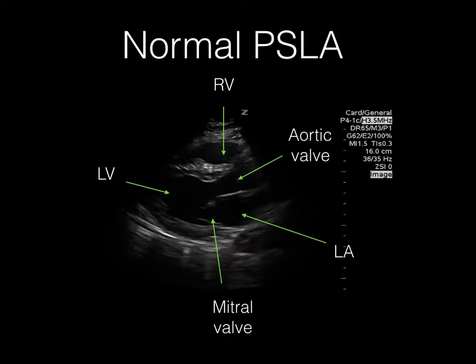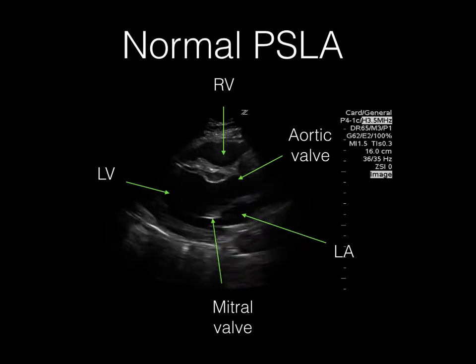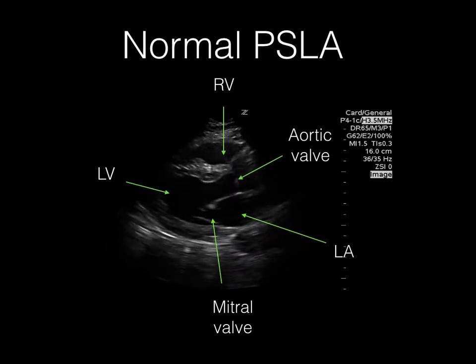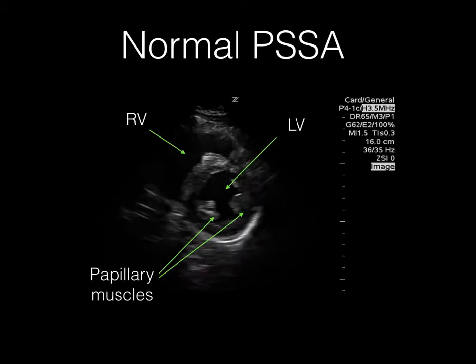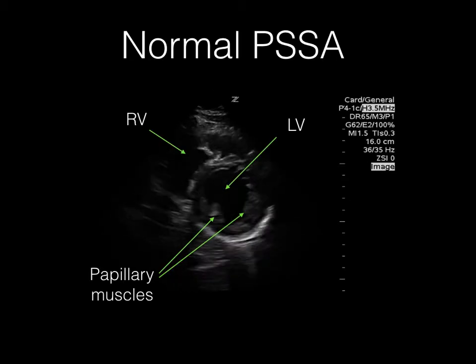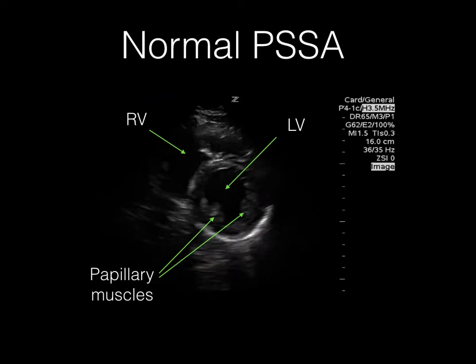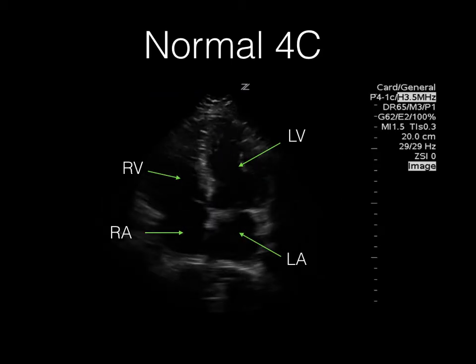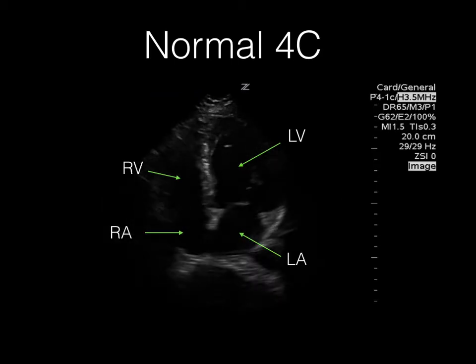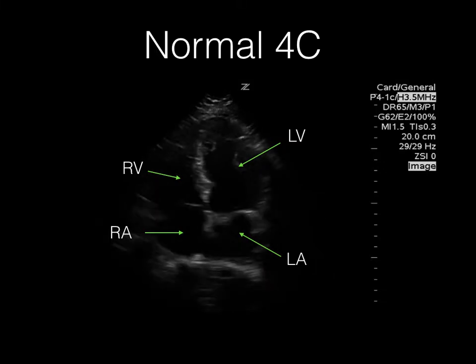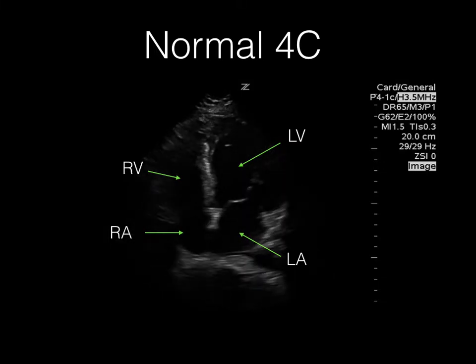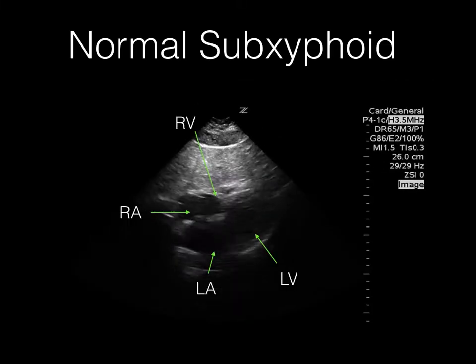We will review what images we expect to have with a normal heart. We can see here a normal parasternal long axis view. Here is a normal parasternal short axis view showing good left ventricular systolic contraction. We now see a normal four chambers view and a normal subcostal view as well.